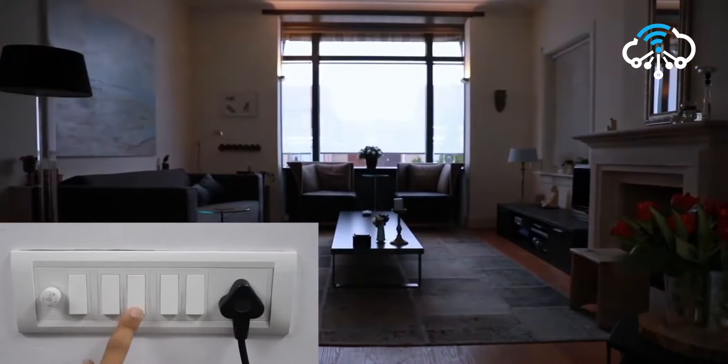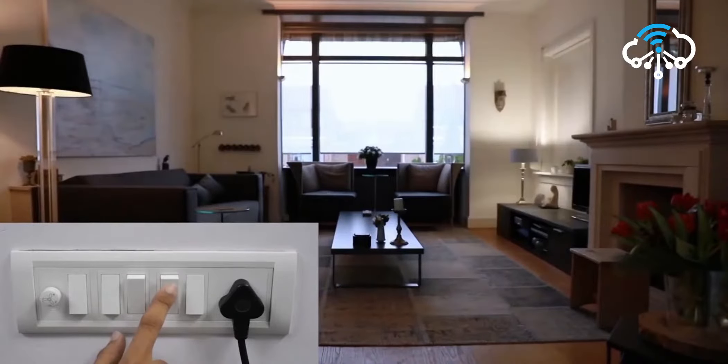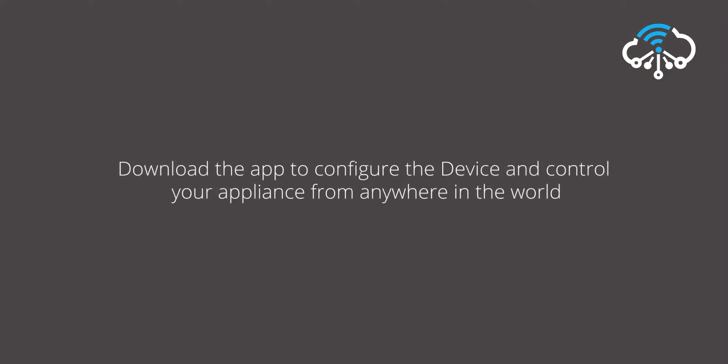Switch on power. Toggle both the appliance switches on and off. Ensure that the appliance is functioning smoothly. And there you go, you are done with the installation of the Node Switch. All you need to do now is download the automation app to configure the device and control your appliances from anywhere in the world.